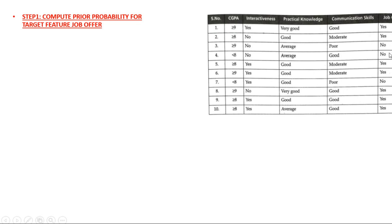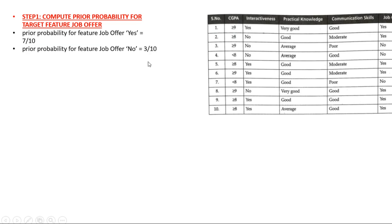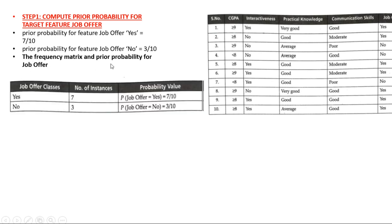The target feature is job offer. For the last column, which is the target feature, we find the prior probability. Prior probability for job offer = yes: counting the yes values — 1, 2, 3, 4, 5, 6, 7 — out of a total of 10. So prior probability for job offer = yes is 7/10. Prior probability for job offer = no is the remaining 3/10.